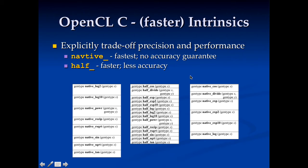OpenCL also provides faster intrinsics. There are native versions — these are the fastest, but have no guarantee of accuracy. Basically, the native ones could theoretically be random number generators, but generally they give you something like what you'd expect. So native divide probably gives you something close to a divide, but there's no guarantee. There are also half versions — faster than standard, but with some guarantee on accuracy, just generally lower. By having these different versions, you as the programmer can trade off precision and performance in a reasonably controlled manner.